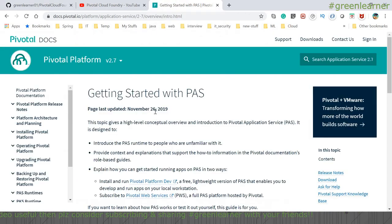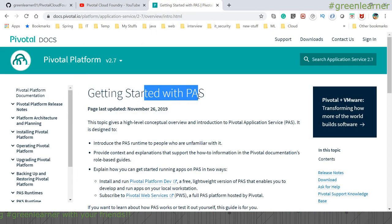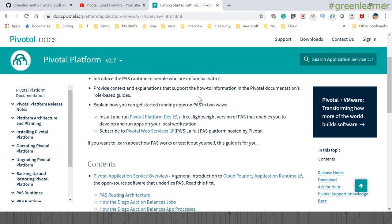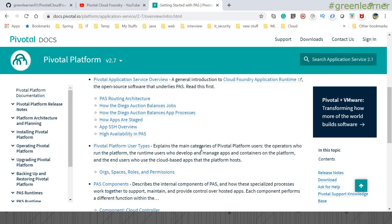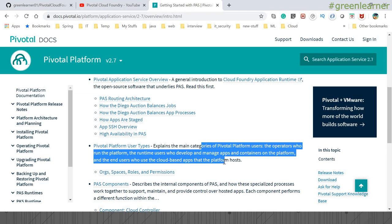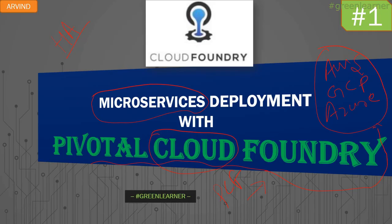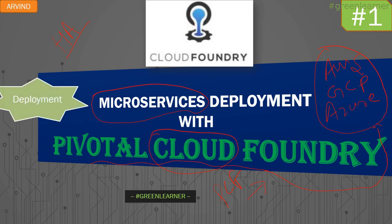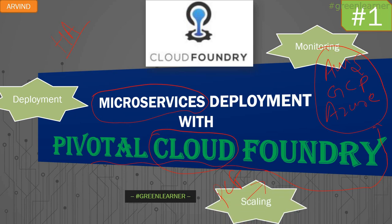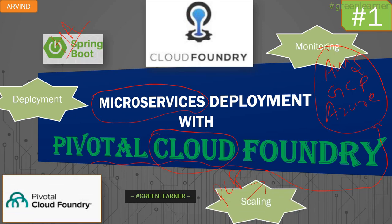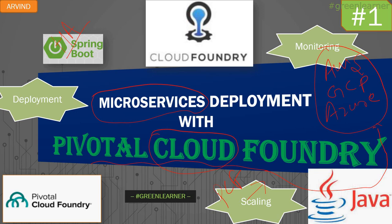This is the official documentation page for the Pivotal platform, which will be the primary reference for the videos — so you'll get correct and exact information as mentioned in the documentation. When it comes to your application, we'll be seeing deployment, monitoring, and scaling. We'll push a Pivotal Cloud Foundry Spring Boot application, and these are all Java-based applications that we're going to explore.